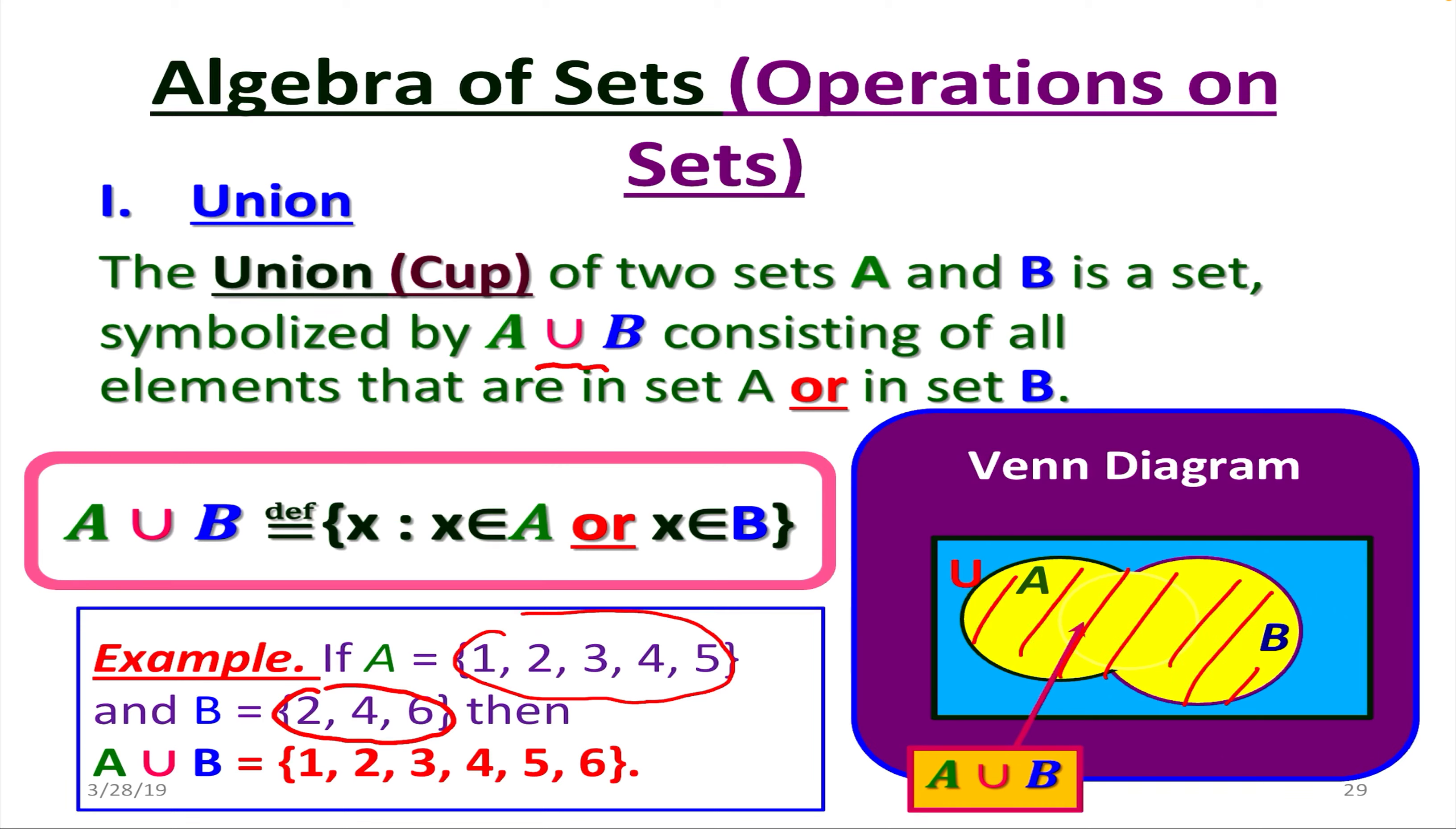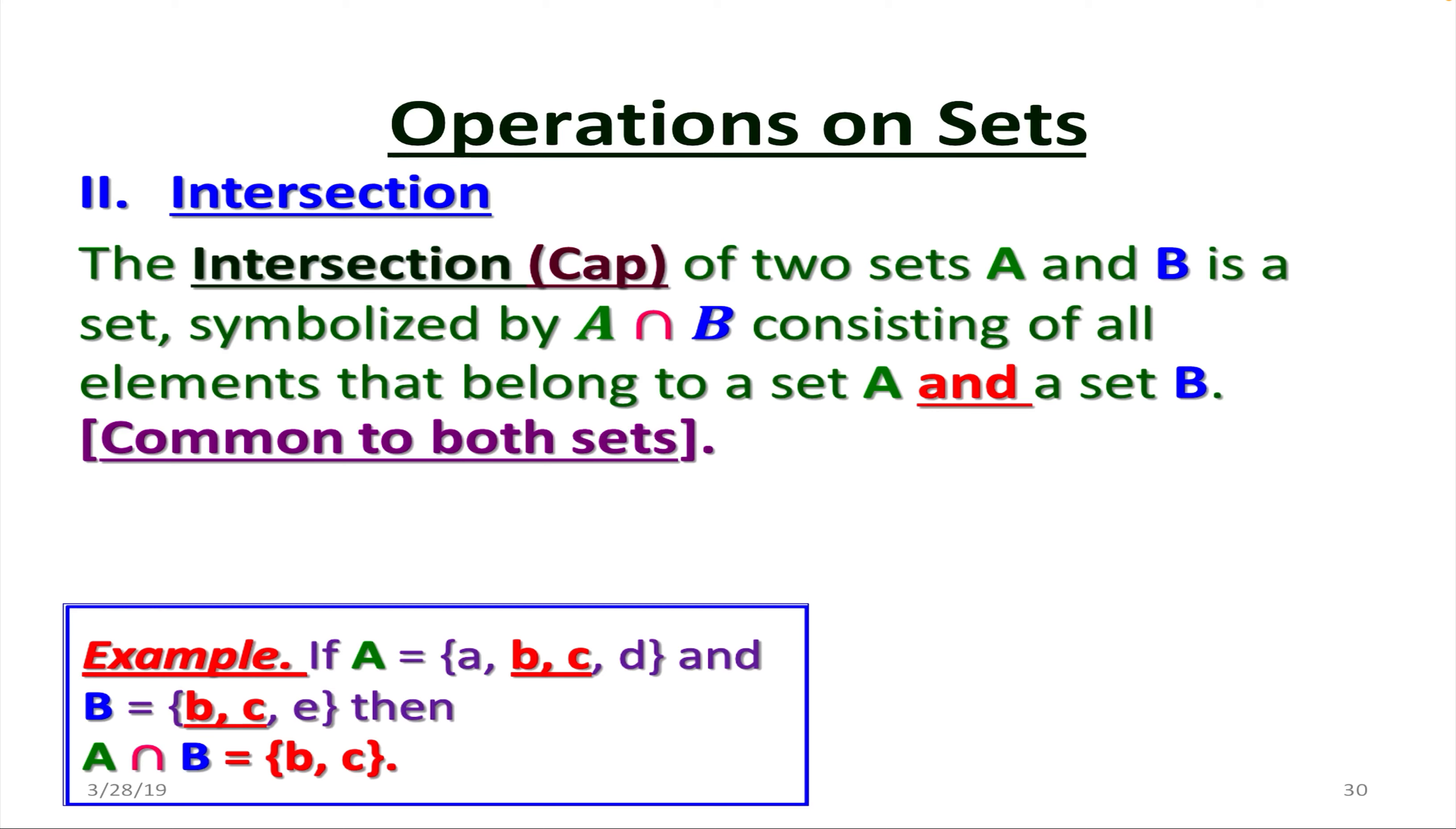The second one is going to be intersection. So the intersection of two sets A and B, symbolized by A intersect B, so the inverse of the cap symbol, so it's called cap, consisting of all elements that belong to set A and set B. So common to both sets, that's vitally important.